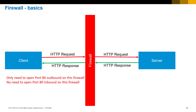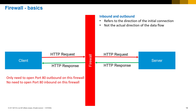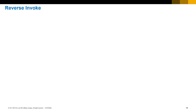You might wonder: the server is sending the HTTP response back to the client — how does the firewall allow it? You need to understand the concept of inbound and outbound. It only refers to the direction of the initial connection; it does not refer to the actual direction of the data flow.